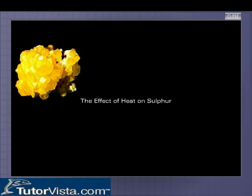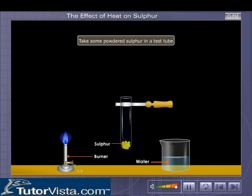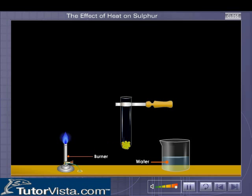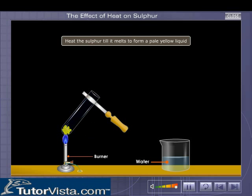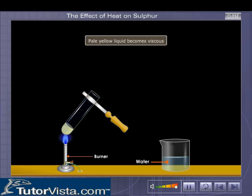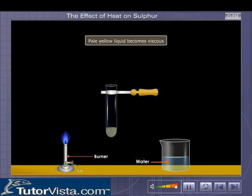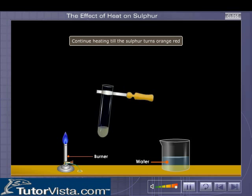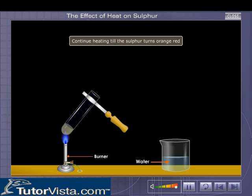The effect of heat on sulfur: take some powdered sulfur in a test tube and heat the sulfur till it melts to form a pale yellow liquid. Observe that the pale yellow liquid becomes viscous on further heating.